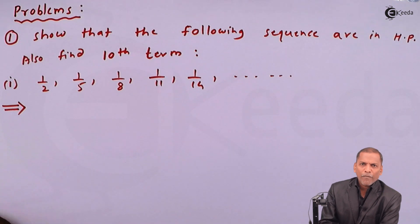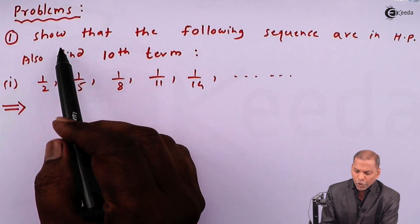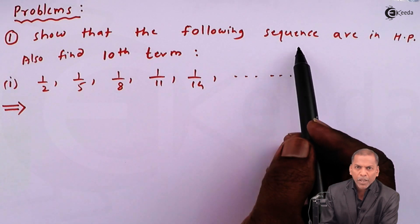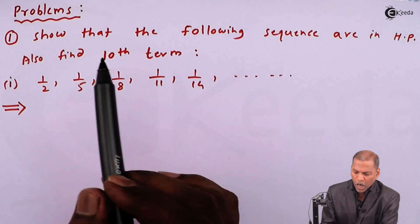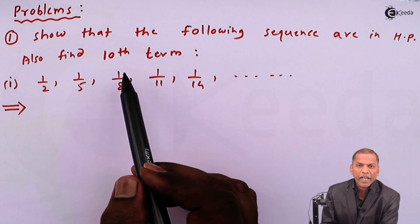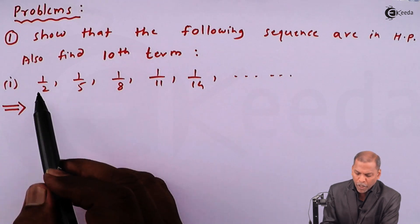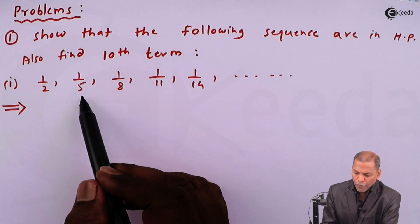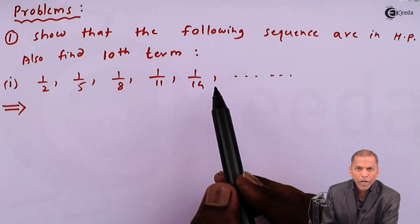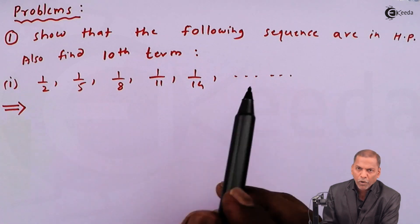The problem one is show that the following sequence are in HP, also find tenth term. The sequence is one upon two, one upon five, one upon eight, one upon 11, one upon 14 and going on.